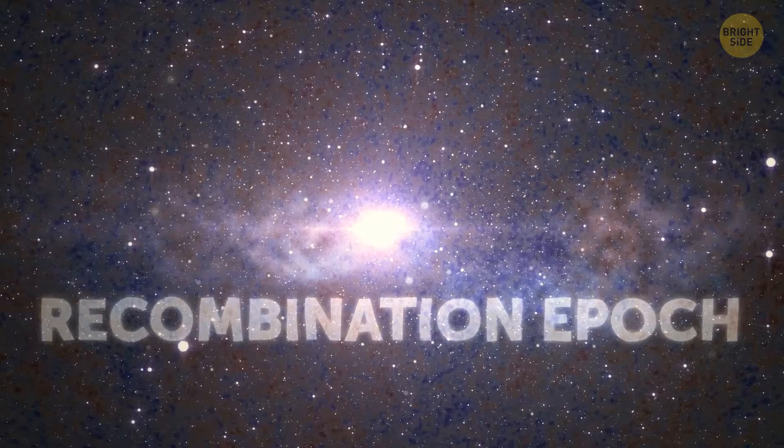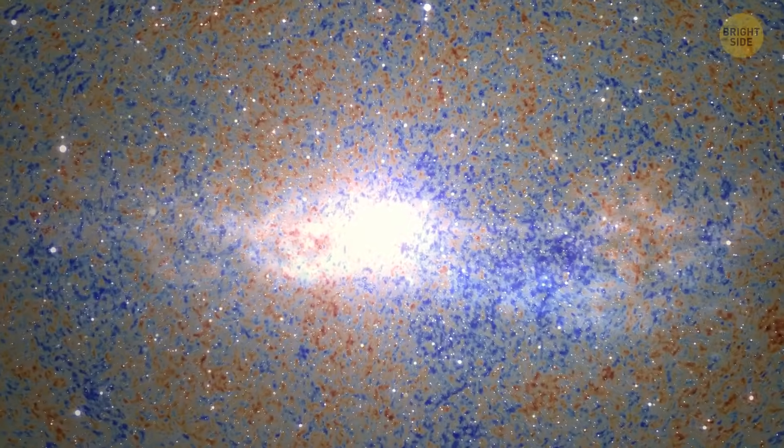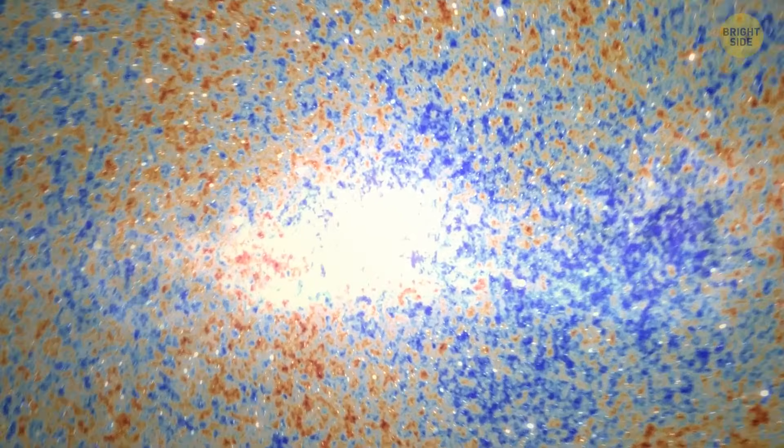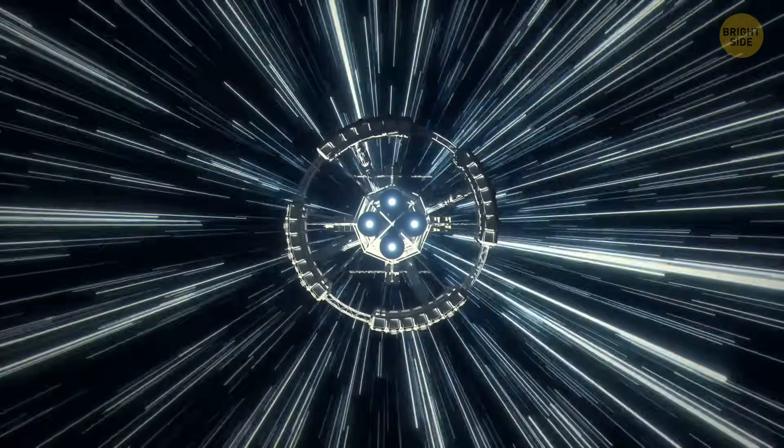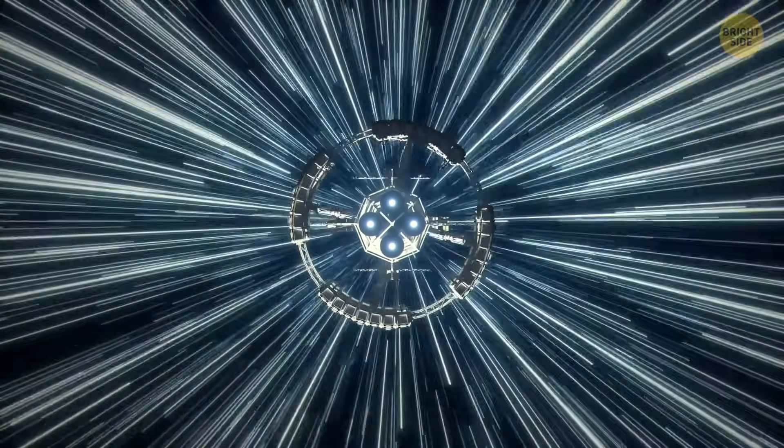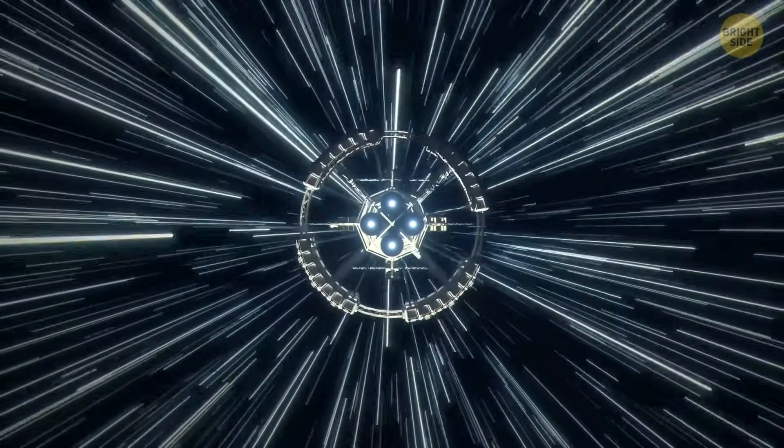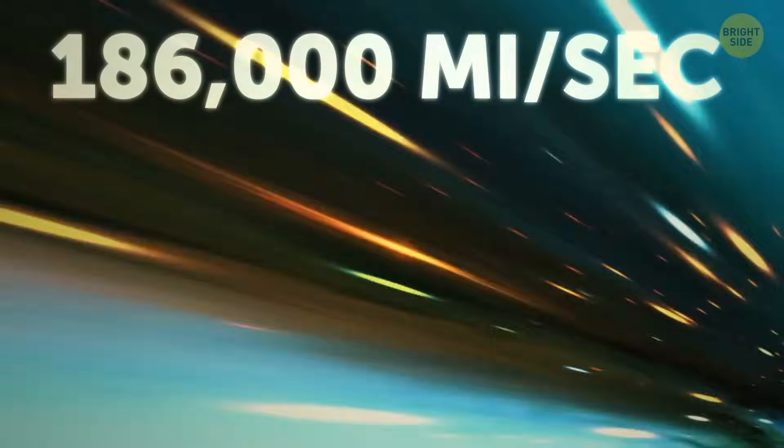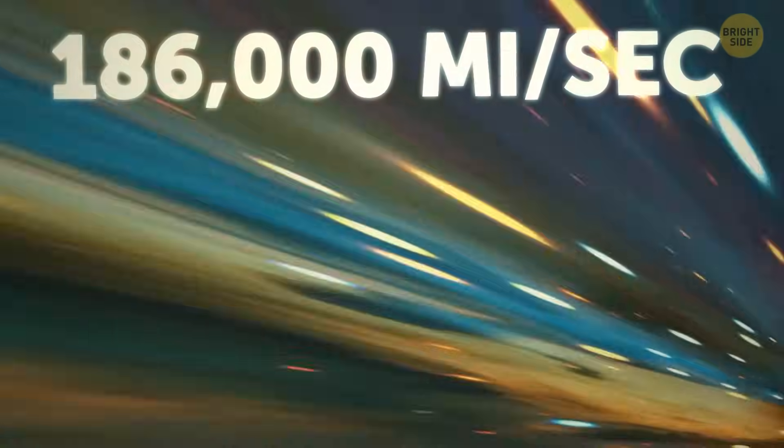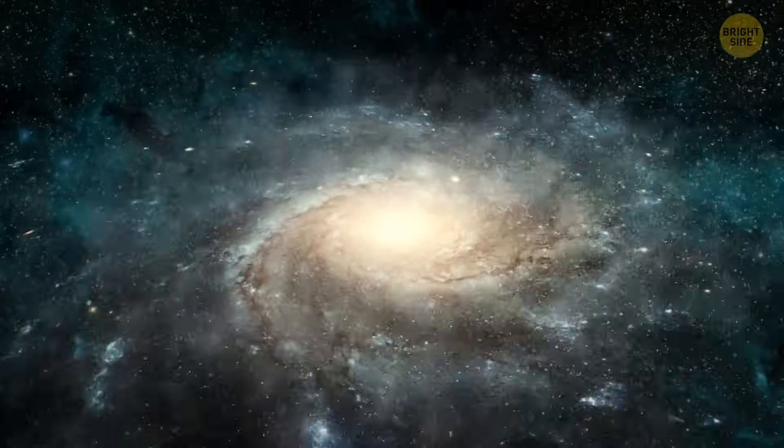Once the foggy era ended, the light could travel freely. Finally, the universe became like a vast playground for light to bounce around and explore. And, as you know, light has a certain speed: 186,000 miles per second, to be specific. And it takes some time for light from distant places to reach us.